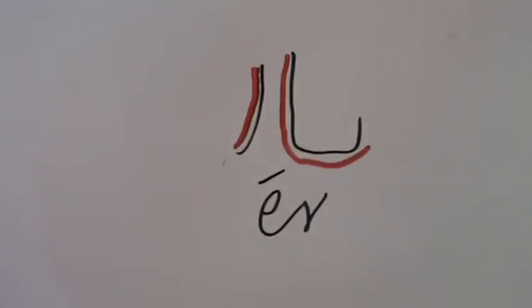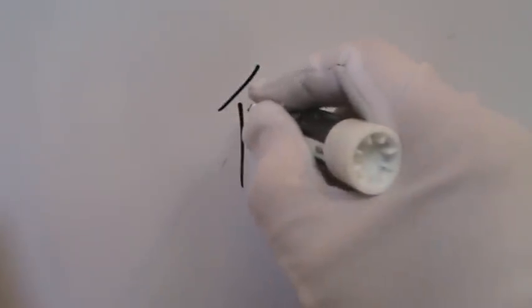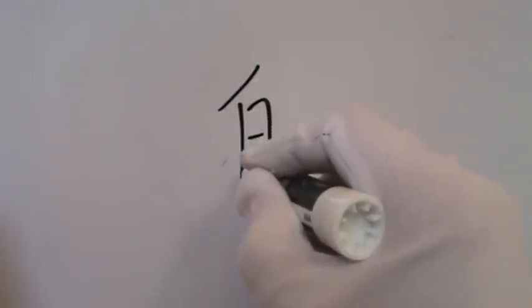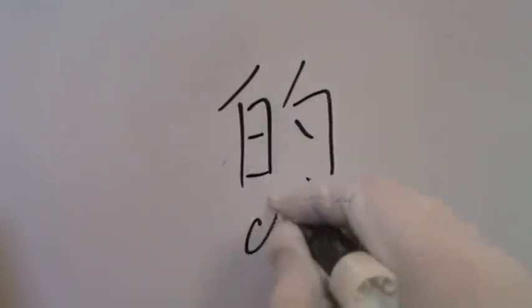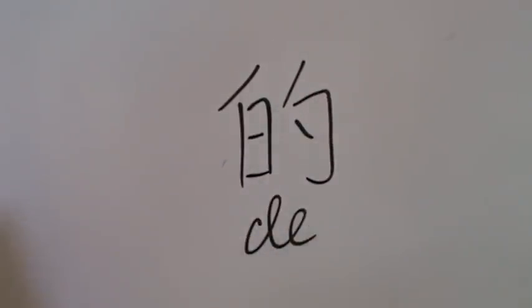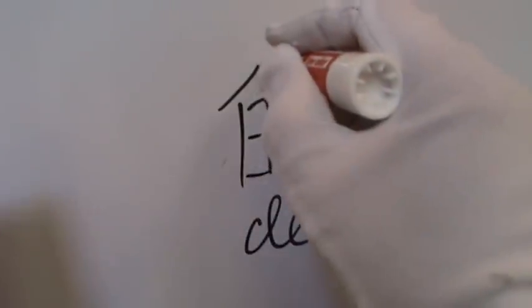Number 27: 的 (D), written with 8 strokes. D is usually pronounced in the neutral tone. It's a structural particle, used in possessive constructions. Like 我的 (W, D) meaning 'my', or 你的 (N, D) meaning 'your'. And the radical is this one.